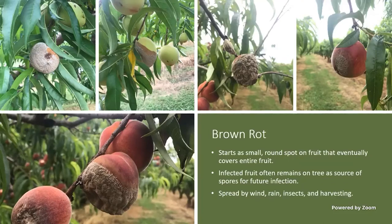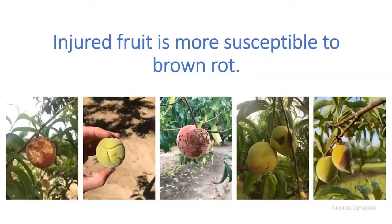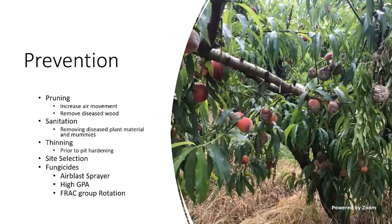Fruit is more susceptible to brown rot when it has physical injury. These are all extreme examples, but if you see fruit that's heavily damaged, go ahead and knock it off because it will most likely get brown rot and that creates more spores for infecting healthy fruit. Going left to right in the picture: bird damage, cracking from expanding too rapidly, bacterial spot, stink bug damage, and the far right is what I believe is cold damage — the pit is damaged from the inside out and you can already see some brown rot developing on the bottom of that fruit.